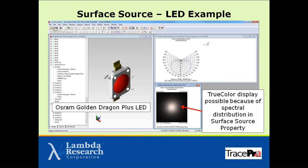Here's the same OSRAM Golden Dragon LED modeled with a surface source. A small object in the center represents the die of the LED with a surface source property based on the LED data sheet. The angular distribution matches the ray file result because it's based on the same measured LED data. We now have true color — we can see this is actually a white LED — and we could examine color temperature and CIE coordinates. This was generated using the surface source property generator utility.